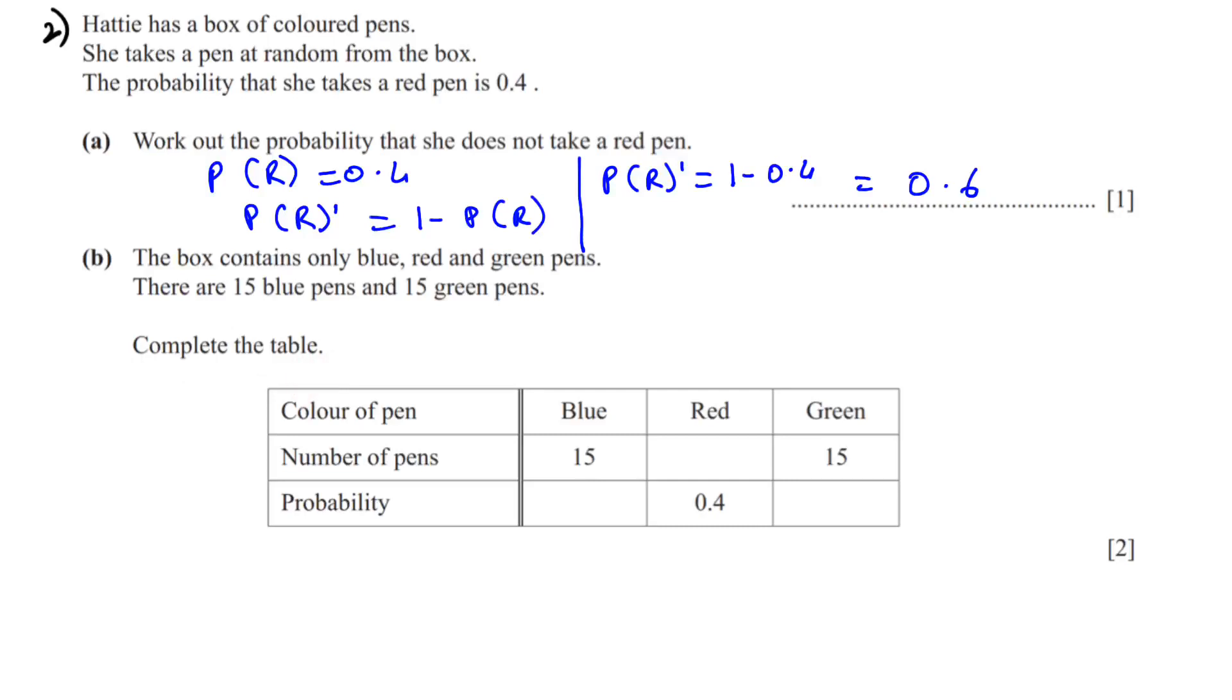So we know that the number of blue pens and the number of green pens are the same. So we can assume that their probability is x and x. When we add all these probabilities it should equal to 1. Therefore x plus x plus 0.4 is equal to 1. 2x is equal to 1 minus 0.4.